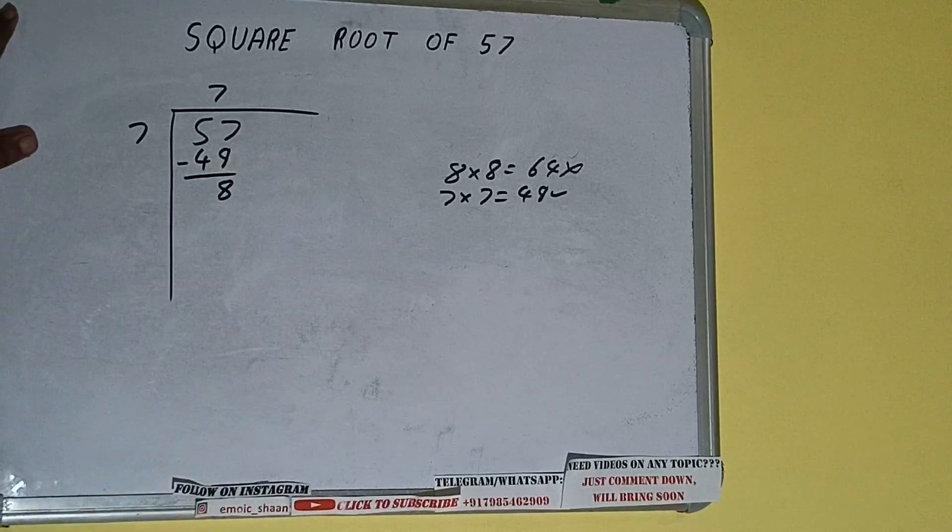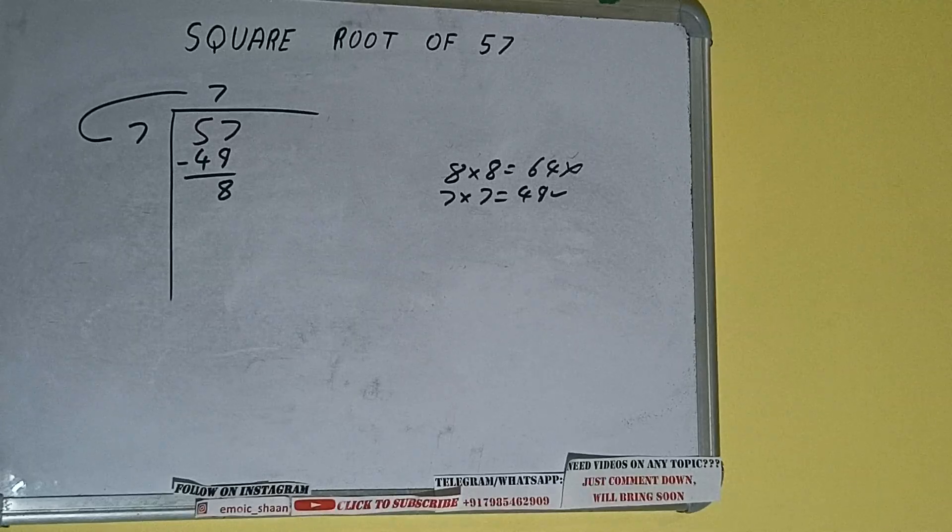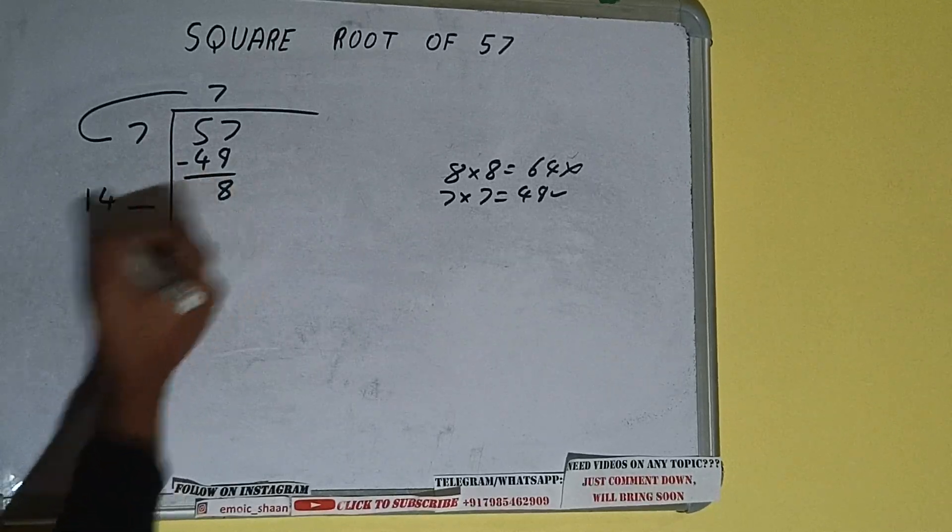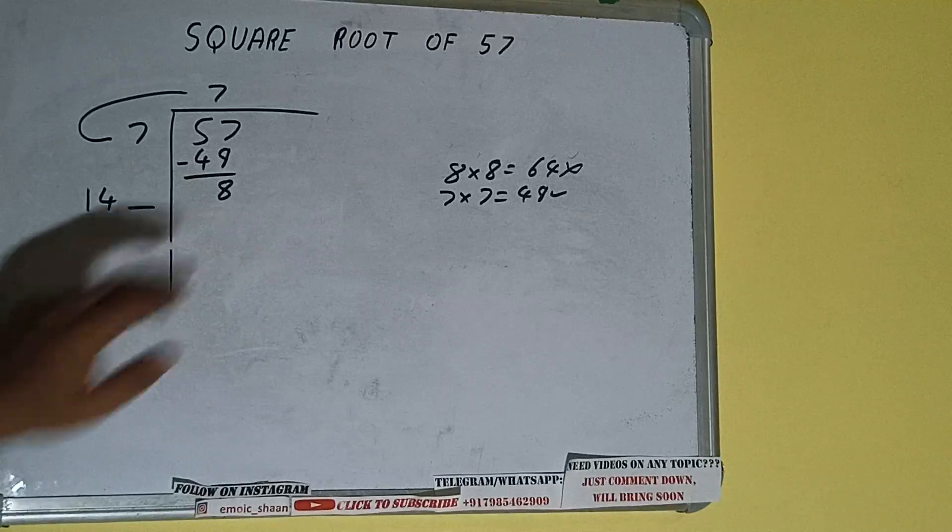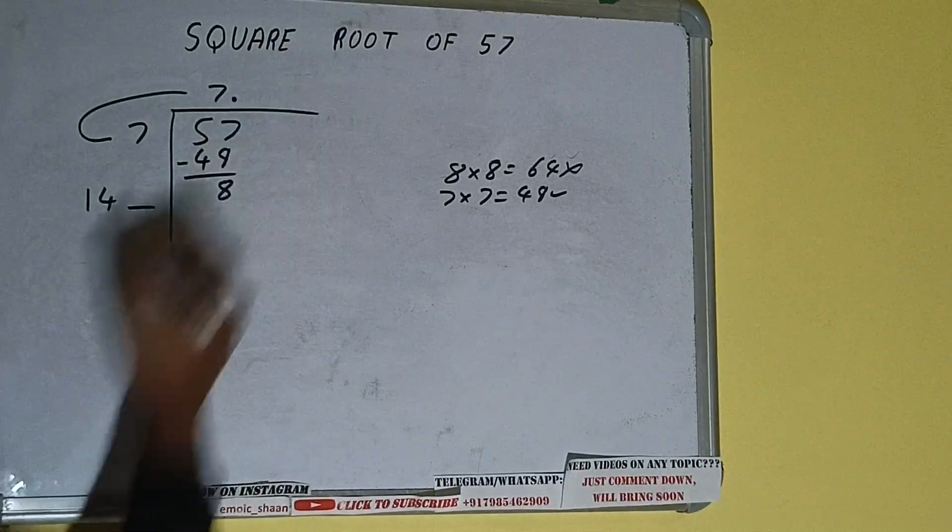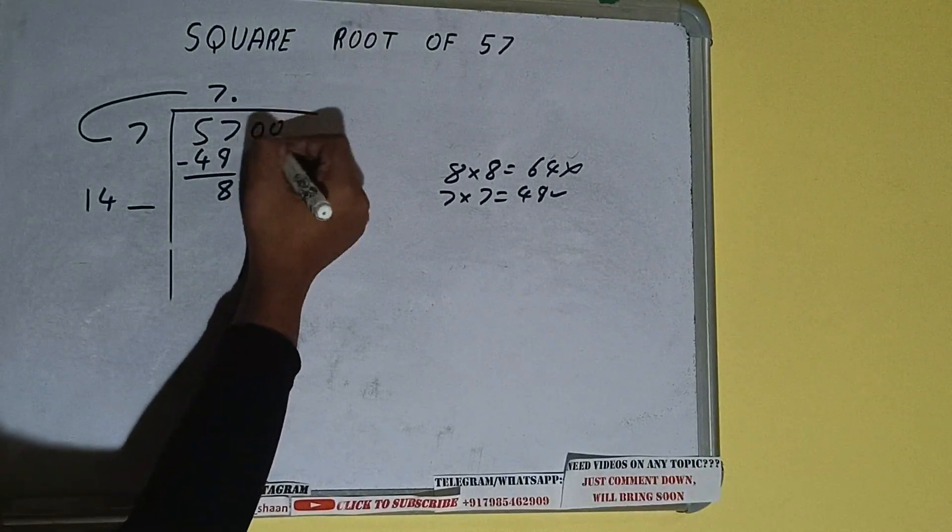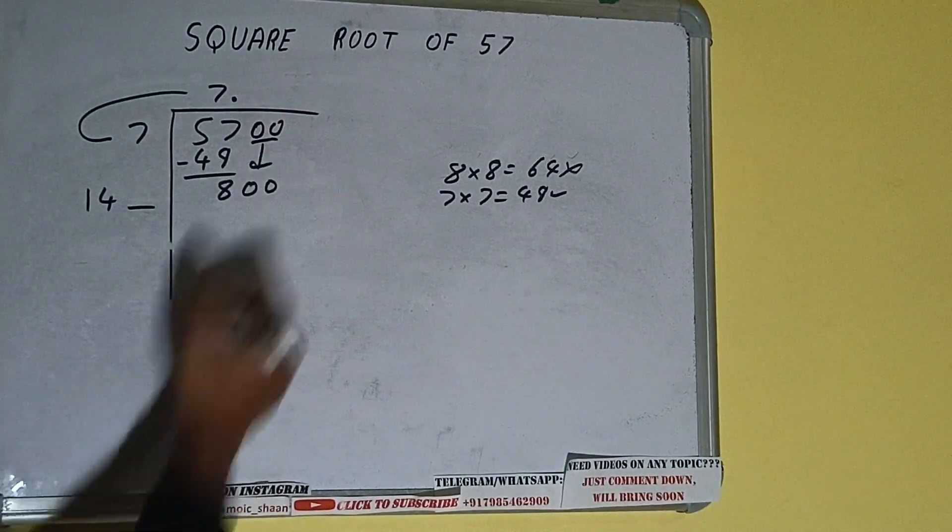We did 7 into 7, so add both. 7 plus 7 will be 14. Write it here and keep a digit extra. This number we need to make it big, but we don't have more pairs, so we'll put decimal. Once we put decimal, we can bring pair of zeros down and number will become as 800.